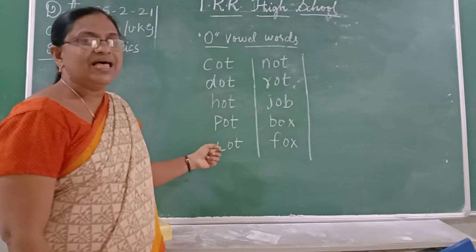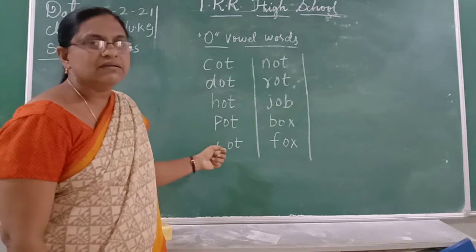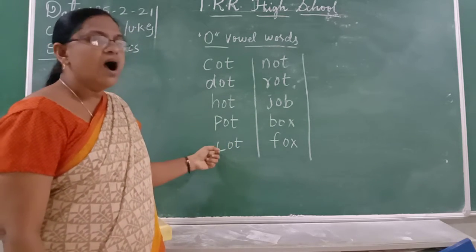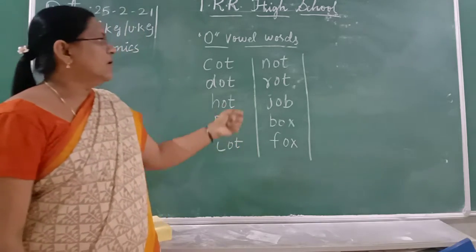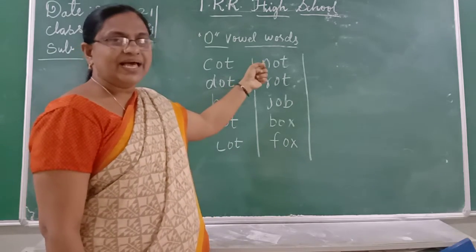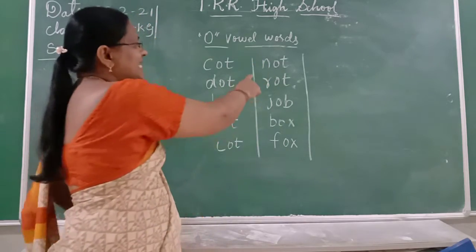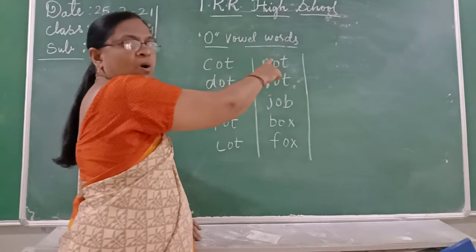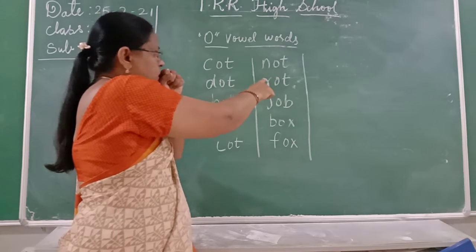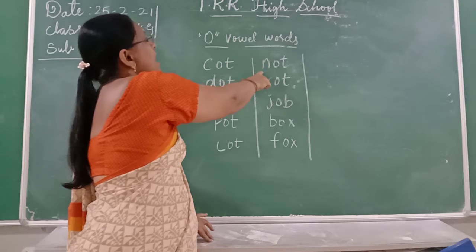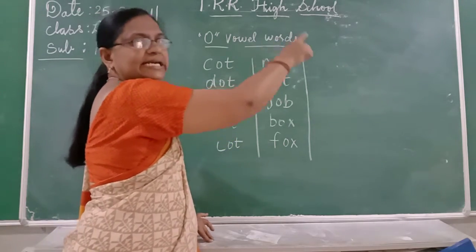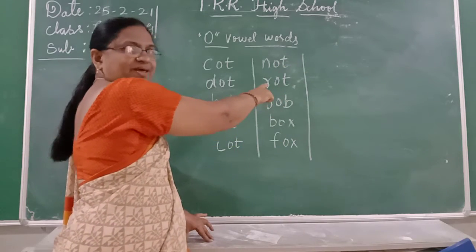What is the sound of L? The sound of L is L. L-O-T. Lot. Then we move on to the next word. The sound of N is N. Sound of O is O. Sound of T is T. Not. N-O-T. Not.